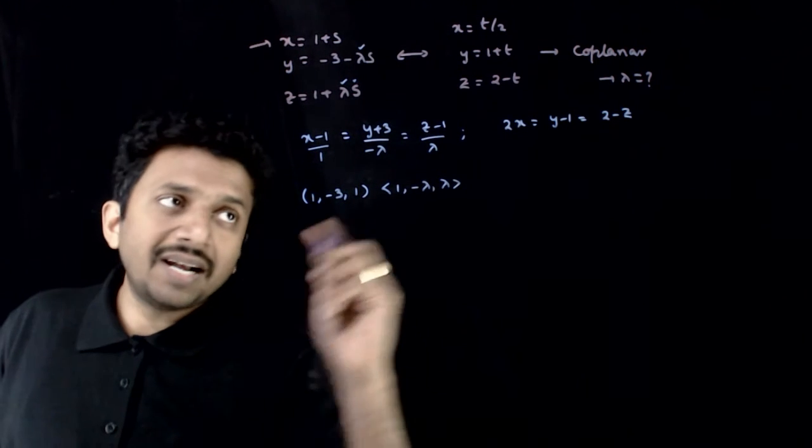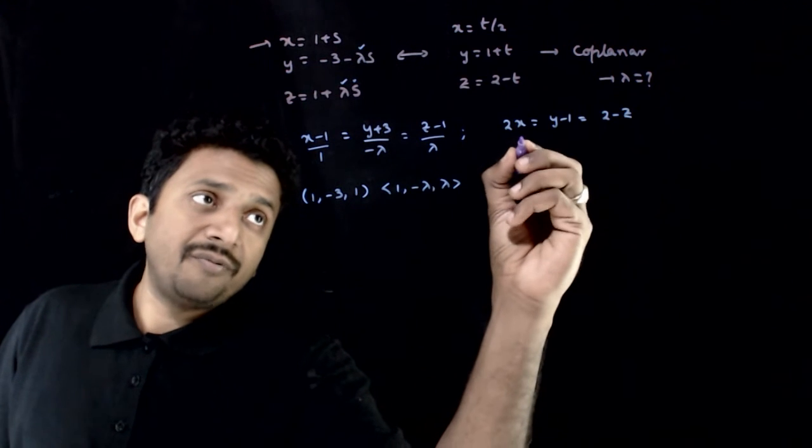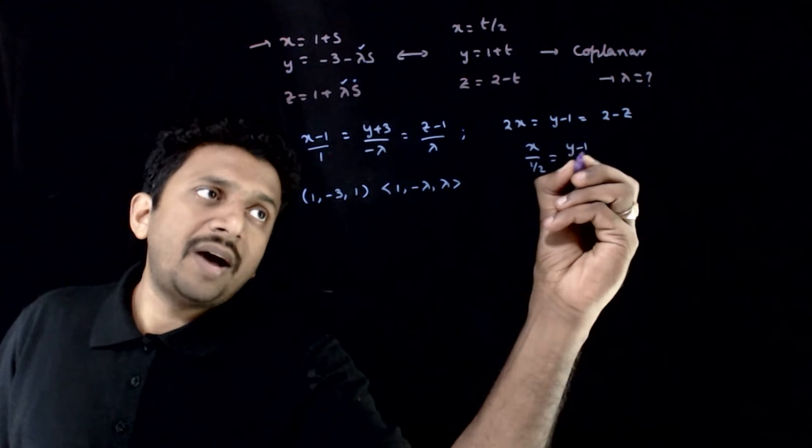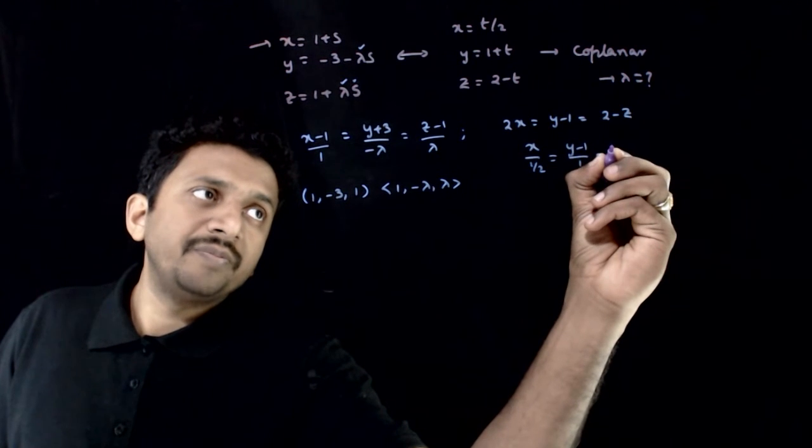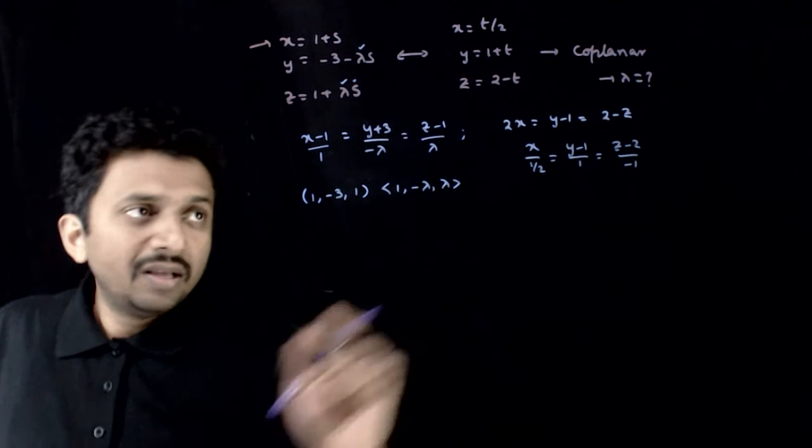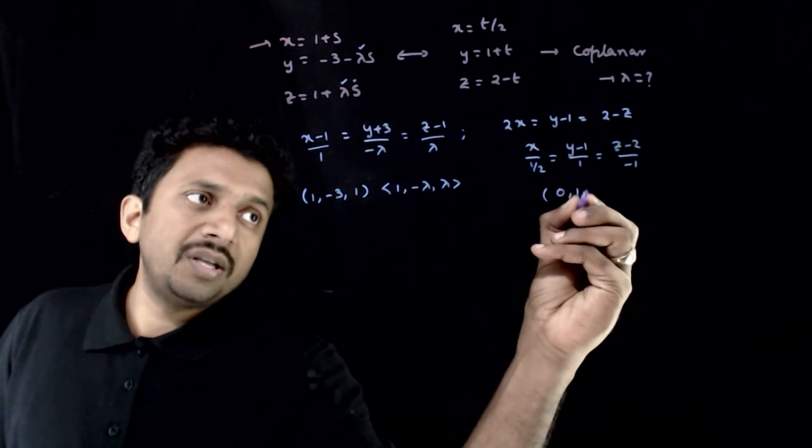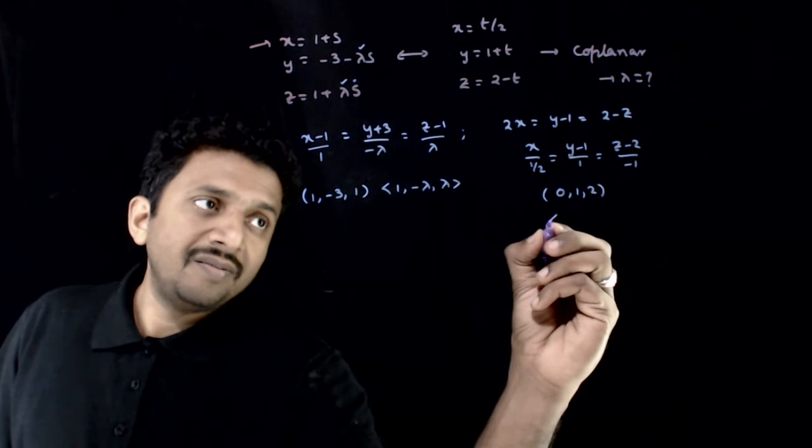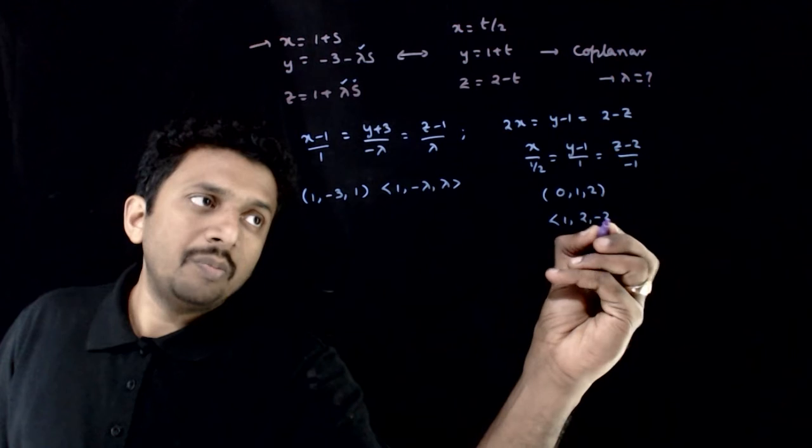Now, if you go to the second line, let me write the standard form. This is x by half is equal to y minus 1 by 1 is equal to z minus 2 by minus 1. Now, if you see this, this is a line which passes through 0, 1, 2 and has DRs half, 1, minus 1, which is same as 1, 2, minus 2.